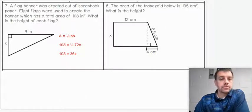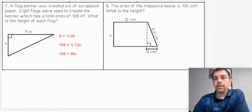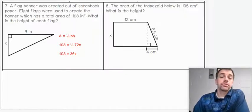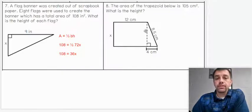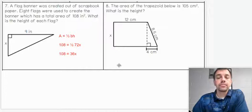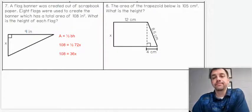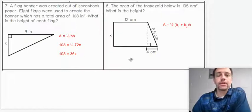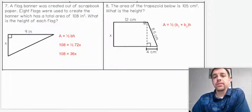Alright, let's look at number 8. The area of the trapezoid below is 105 centimeters squared. What is the height? So this one's fairly straightforward. We have our rectangular shape here, our triangular shape here. Remember, we don't need this slanted length. We only need the top, the bottom, and the height. But we don't have the height, do we?